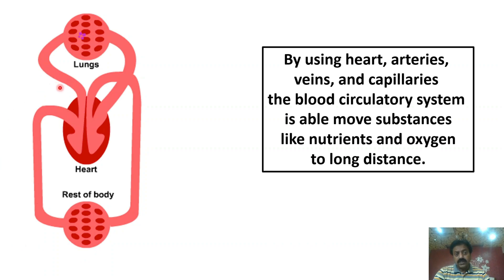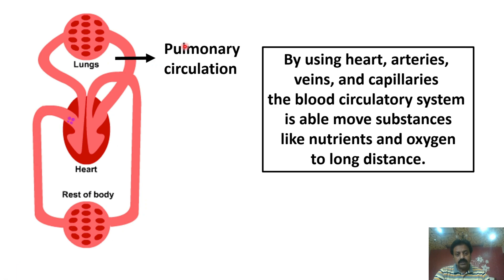The blood circulates from the heart to the lungs and back to the heart — this is called Pulmonary Circulation. Pulmonary Circulation means the circulation between the heart and the lungs.